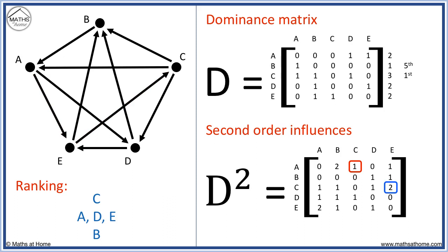And this 2 means that player C beat 2 players, who then went on to beat E. That is C beating A, who then beat E and C beating D, who then beat E.